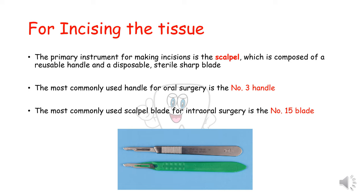Let's talk about the instruments for incising the tissue. The primary instrument for making incisions is called the scalpel, which is composed of a reusable handle and a disposable sterile sharp blade. The most commonly used handle for oral surgery is the number 3 handle, and the most commonly used scalpel blade for oral surgery is the number 15 blade.